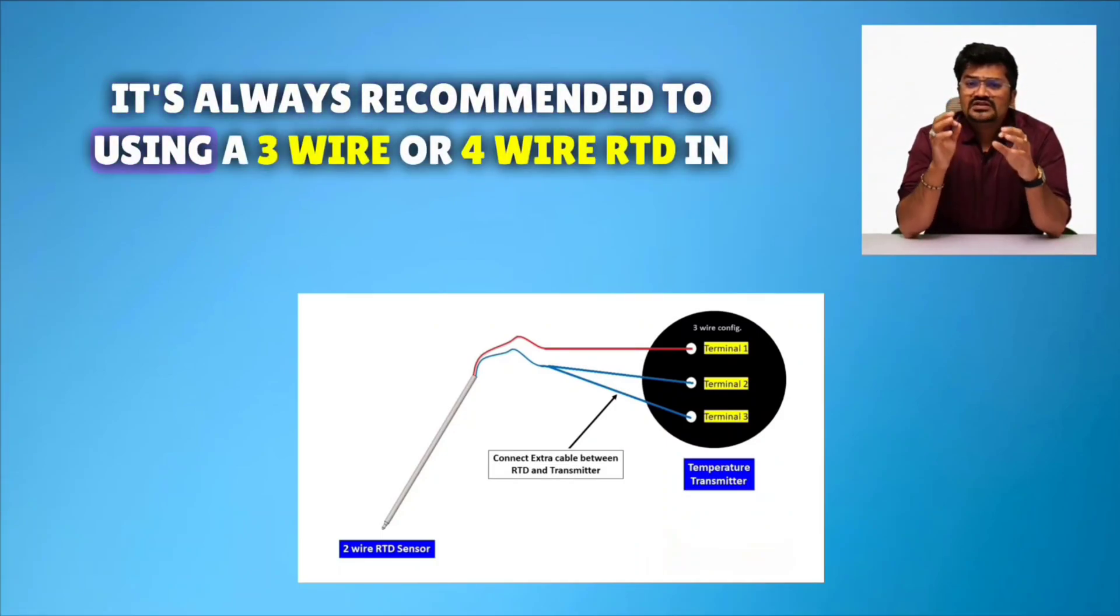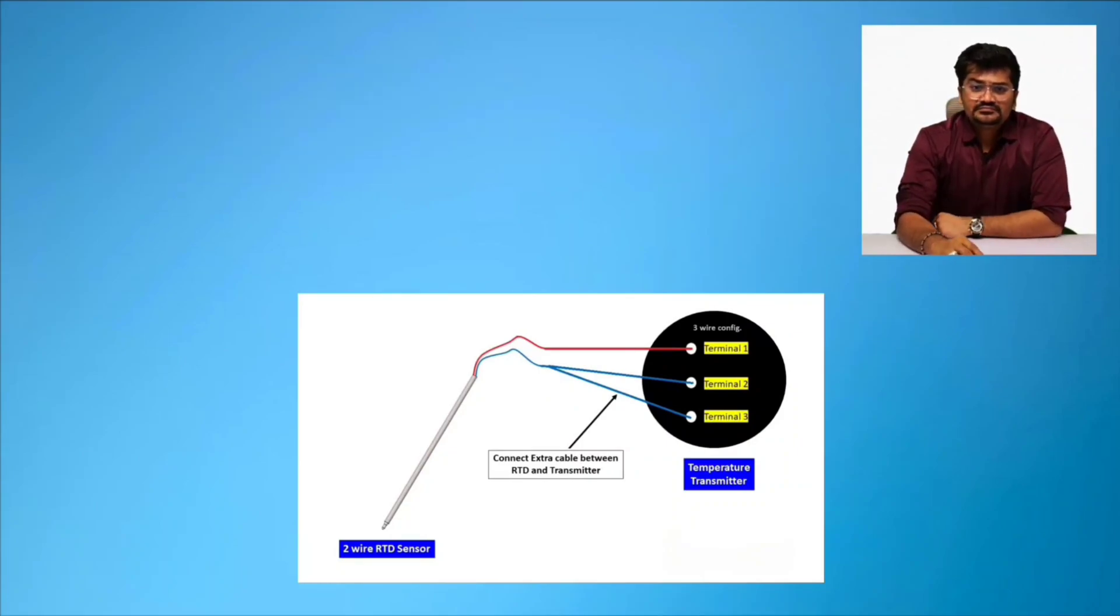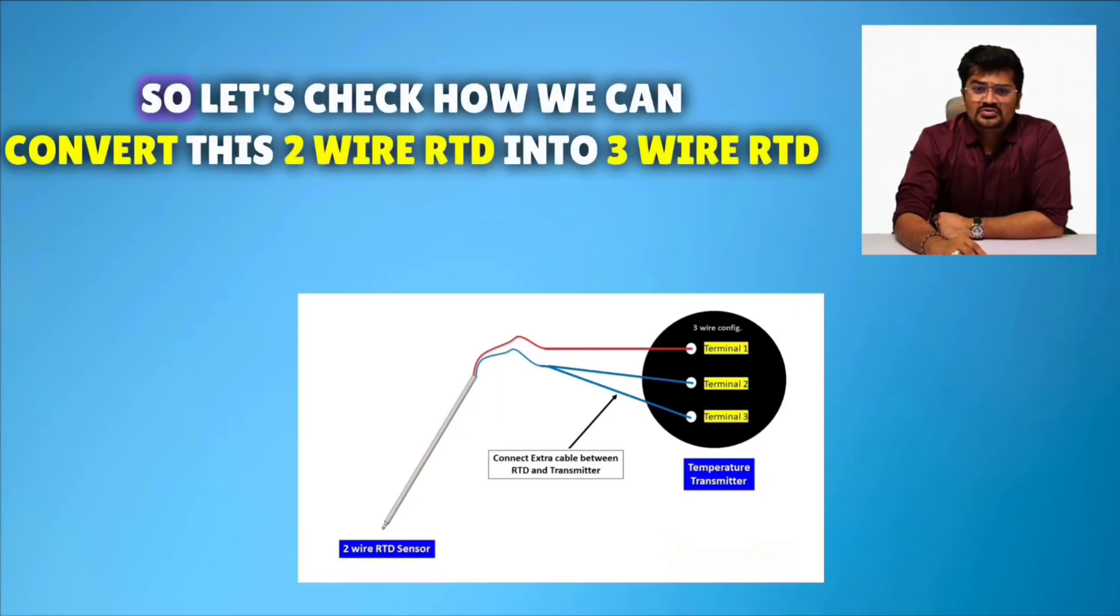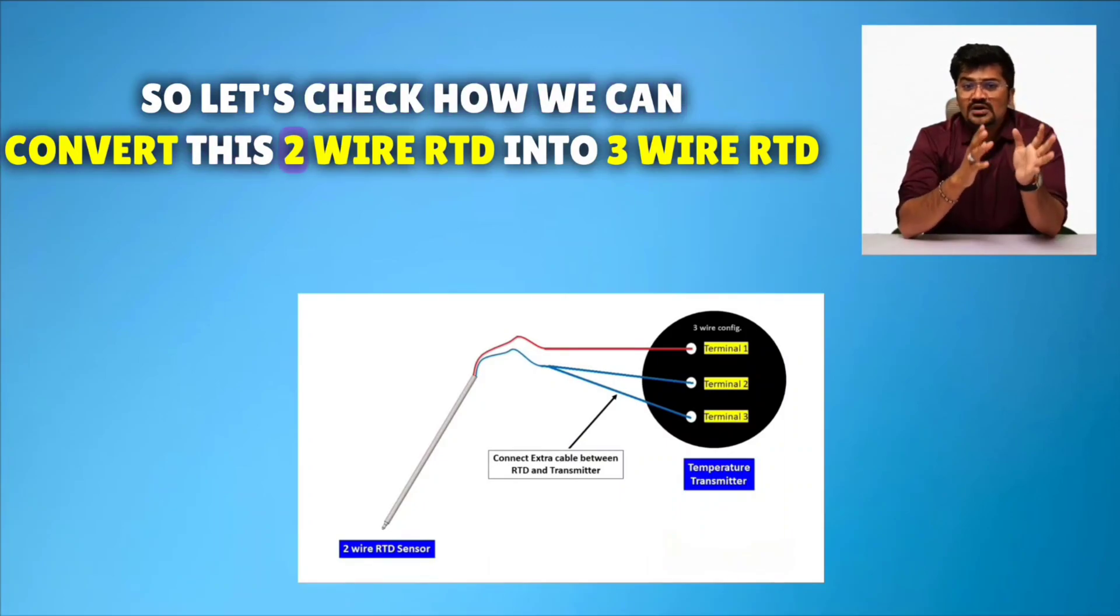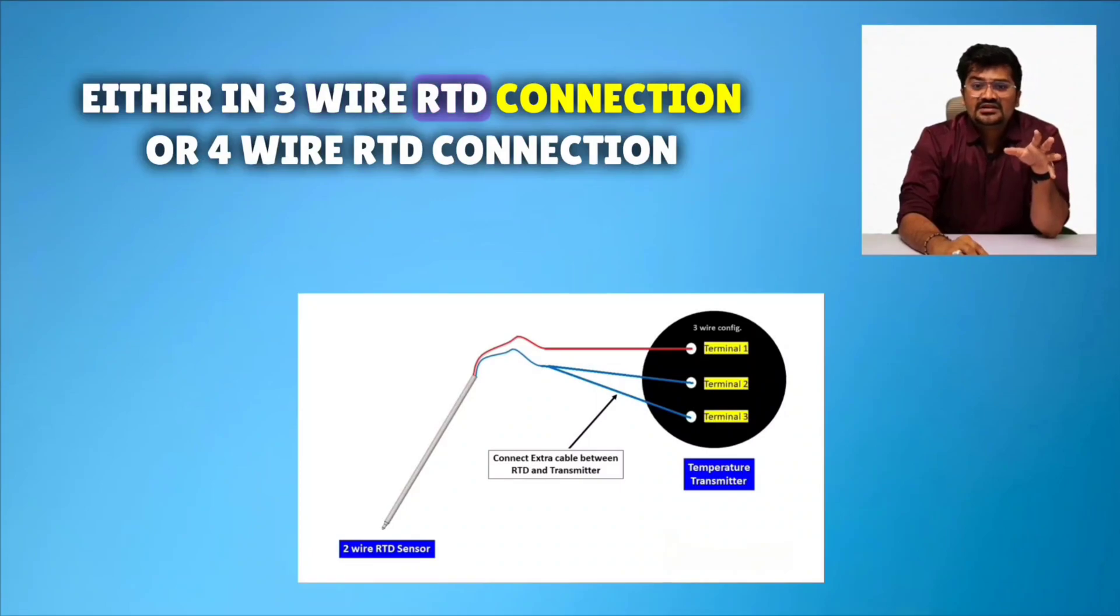It's always recommended to use a 3-wire or 4-wire RTD in this type of situation. Now, we have already 2-wire RTD. So let's check how we can convert this 2-wire RTD into 3-wire. We have to connect 2-wire RTD to the temperature transmitter either in 3-wire RTD connection or 4-wire RTD connection.